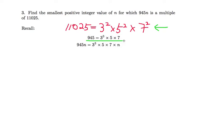So now, what we have to do is define n. 945n can be written as shown here. So what we want to do is find a multiple of 11,025.